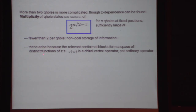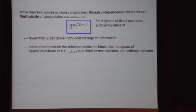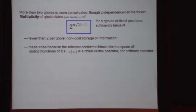Why does this arise from the CFT? You might think that putting a field Sigma into the correlator just gives a single function. The reason we get many functions is that the operator Sigma of W, referred to as a chiral vertex operator, is not quite an ordinary operator. It does some slightly non-local things, with the result that we have more than one distinct conformal block arising.